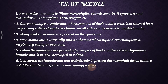Coming to the outermost layer, they have the epidermis which consists of thick-walled cells — this is very important, as it is one of the easy distinguishing characters. It is covered by a very strong cuticle. Stomata are found on all sides, so the needle is amphistomatic — the arrangement of stomata is seen throughout the needle all over.